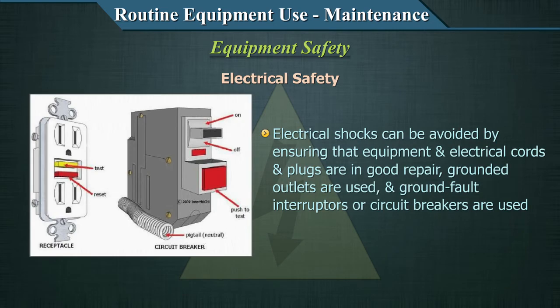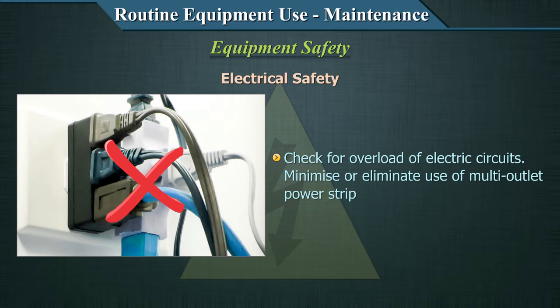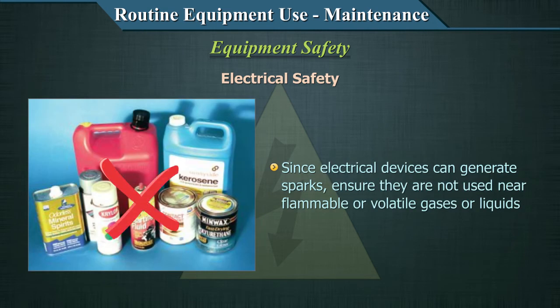Electrical shocks can be avoided by ensuring equipment and electrical cords and plugs are in good repair, using grounded outlets and ground fault circuit interrupters, checking for no overload of electrical circuits, and minimizing use of multi-outlet power strips. Extension cords can cause overloading and should be used with caution. Since electrical devices can generate sparks, ensure they are not used near flammable or volatile gases or liquids.